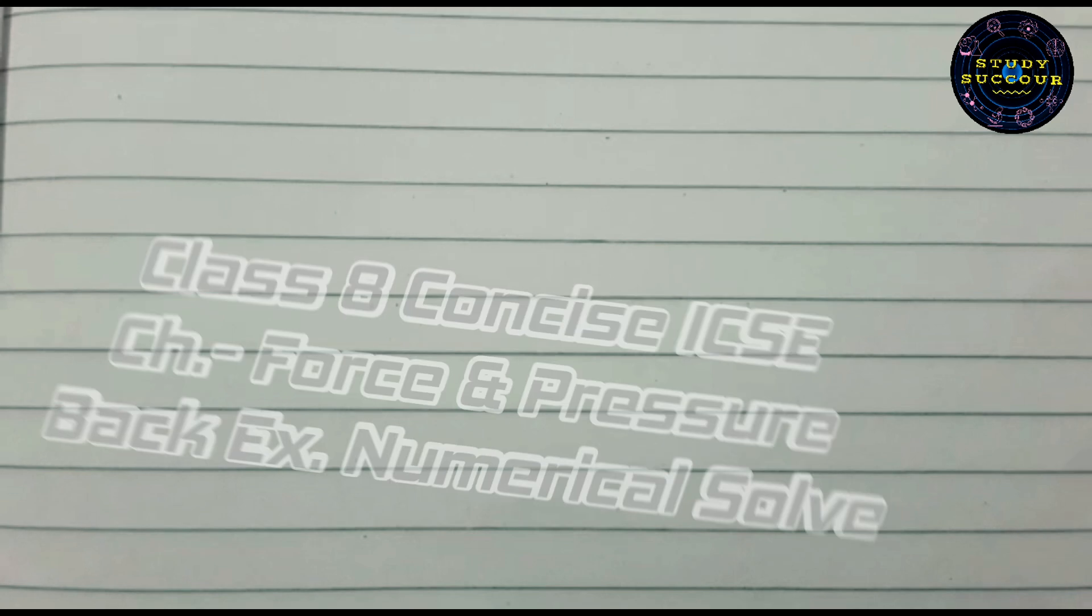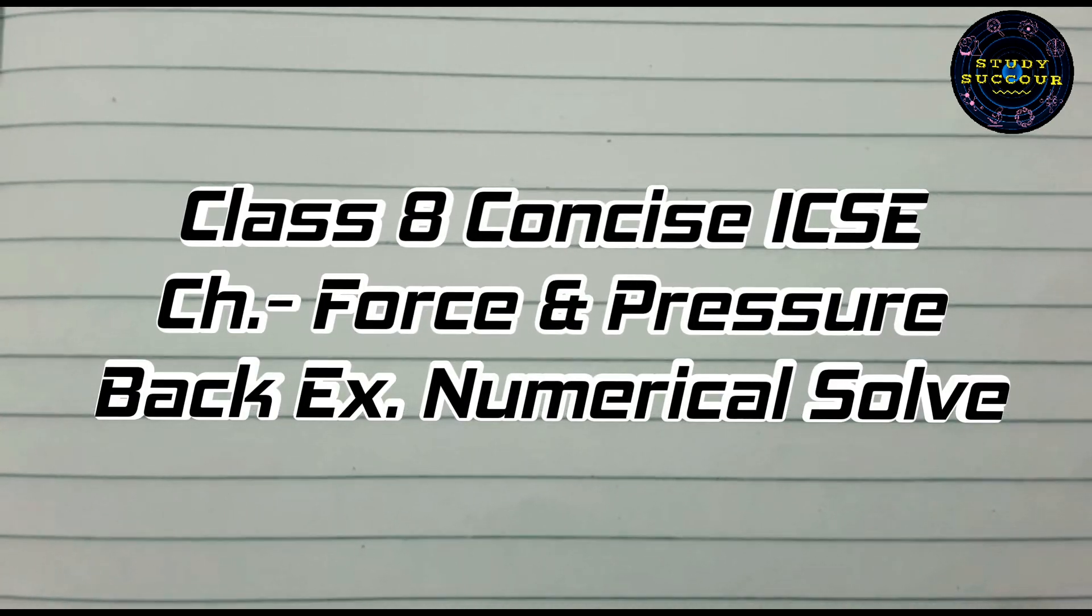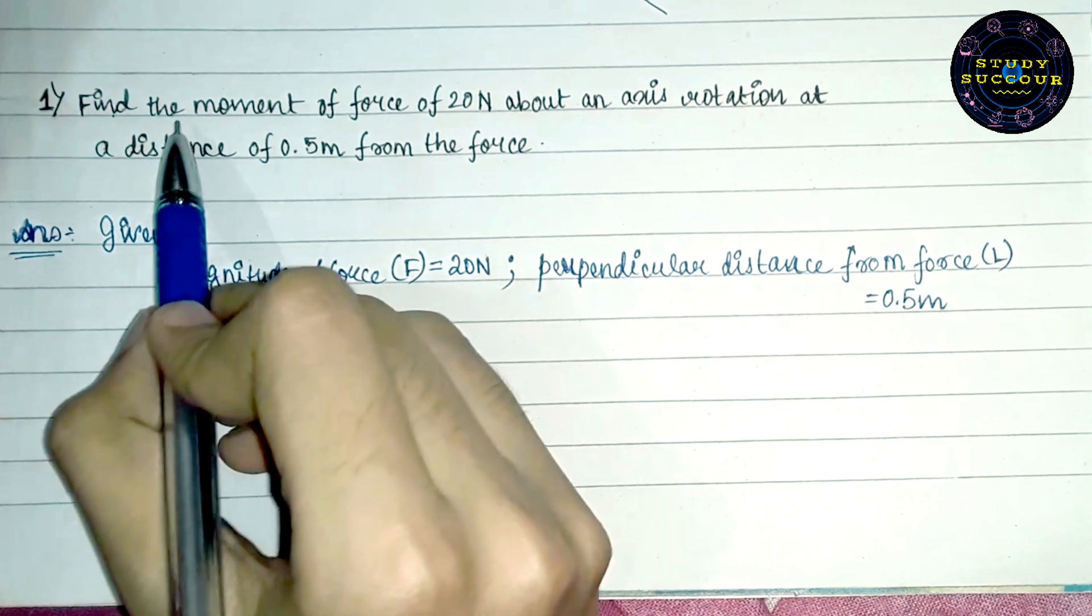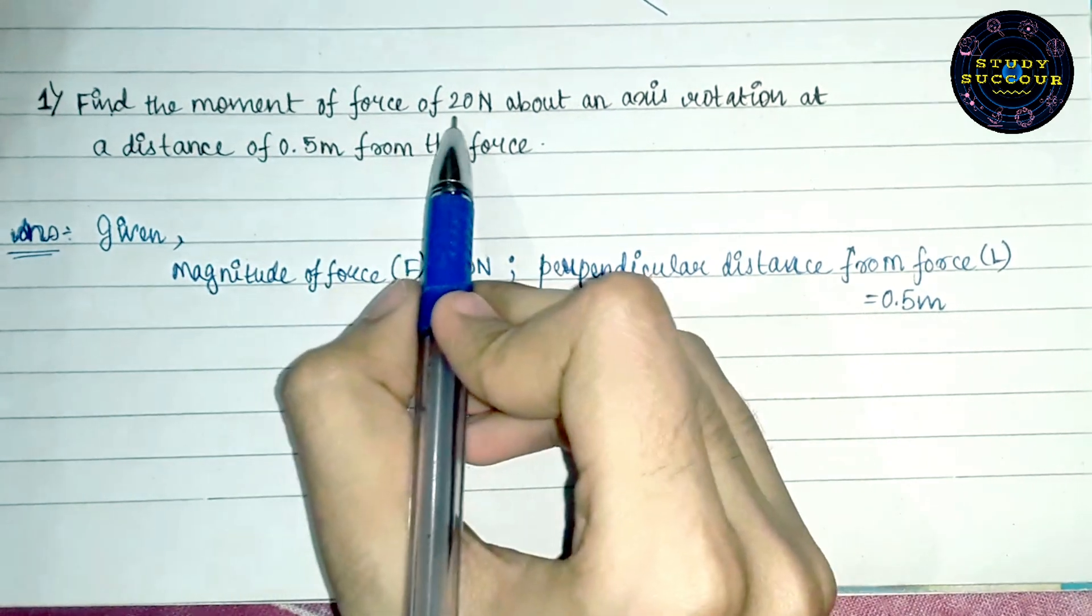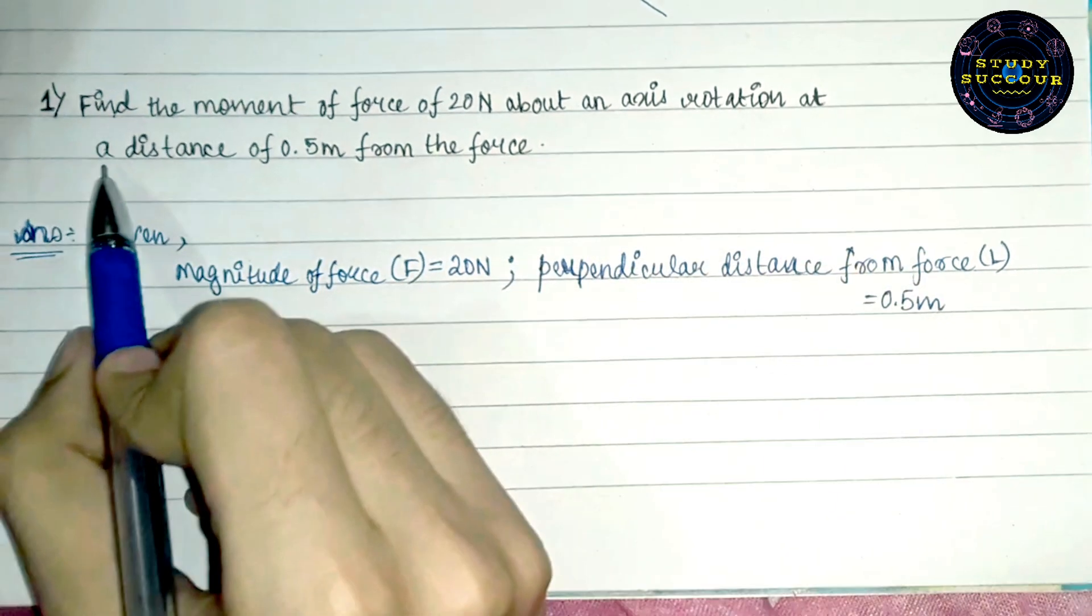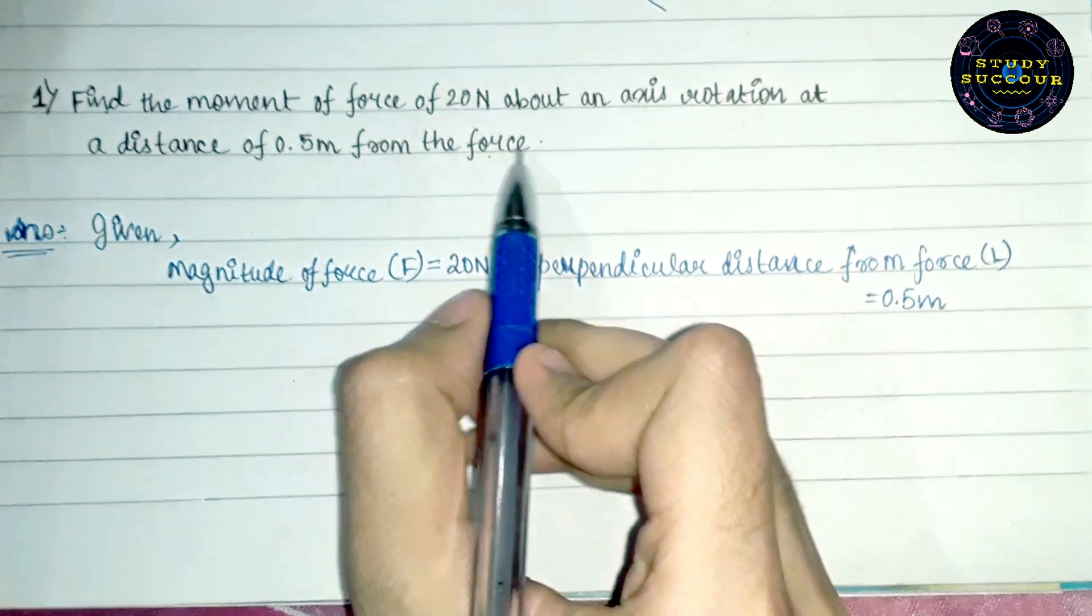So, let's have a look at this very interesting question from class 8 ICSE concise book chapter force and pressure back exercise question number 1. The question says, find the moment of force of 20 Newton about an axis of rotation at a distance of 0.5 meter from the force.